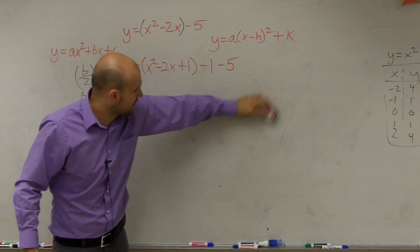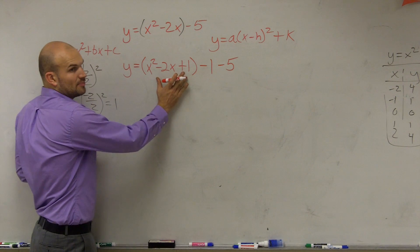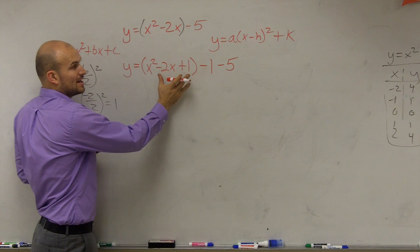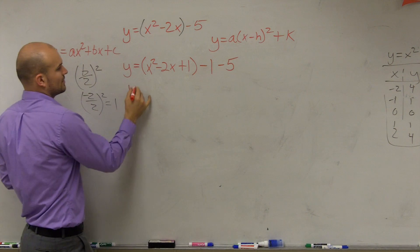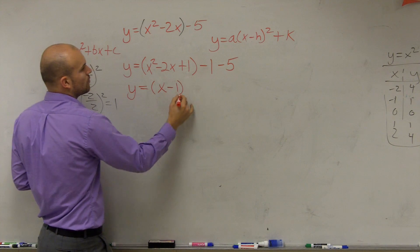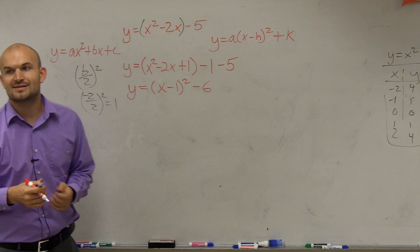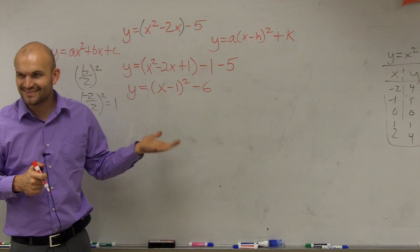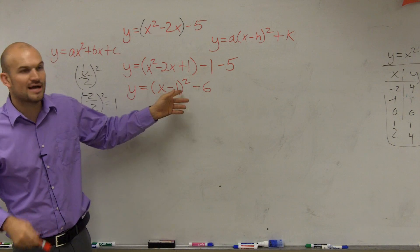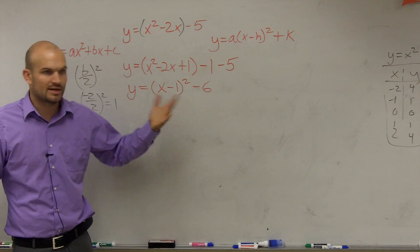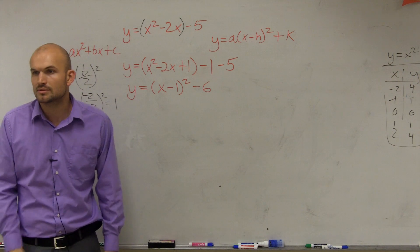Now we've done a lot of these, so I'm not going to go through it so slowly. Here's our perfect square trinomial. We can write a perfect square trinomial as a perfect square, so I can write this as y equals x minus 1 squared minus 6. And guess what I have now? An equation that's in vertex form, right? And we could say the vertex is at 1 comma negative 6, and you could go and graph it from there just like you did on your worksheet.